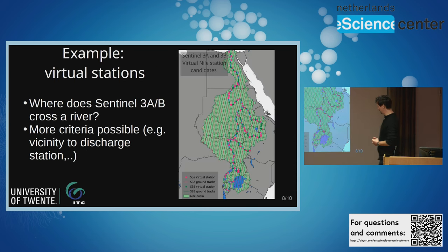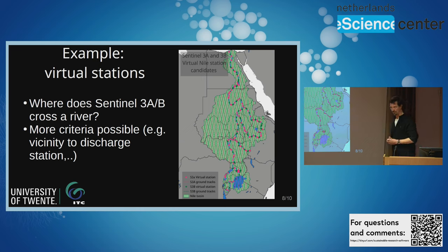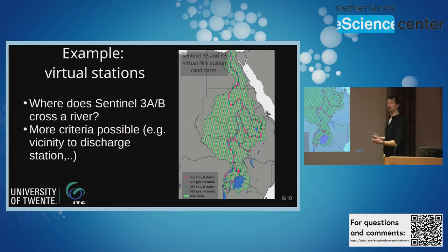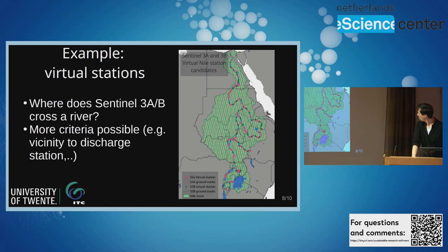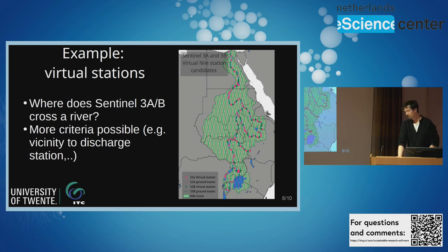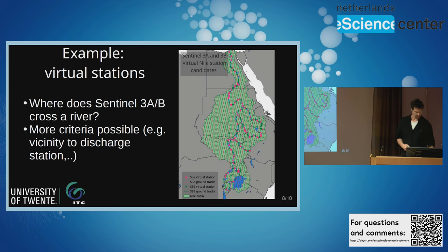Another example, also with radar altimetry, is in the Nile Basin. The question is: where do I find those points where my radar altimetry is crossing a certain river? And maybe I want other constraints — for example, I only want those which are in the vicinity of a discharge station, or I only want those crossings which cross a river with a certain width. The nice thing about putting all this together in a database is that you can start making interesting queries. These are in fact potential candidates for so-called virtual gauge stations in the Nile river system.